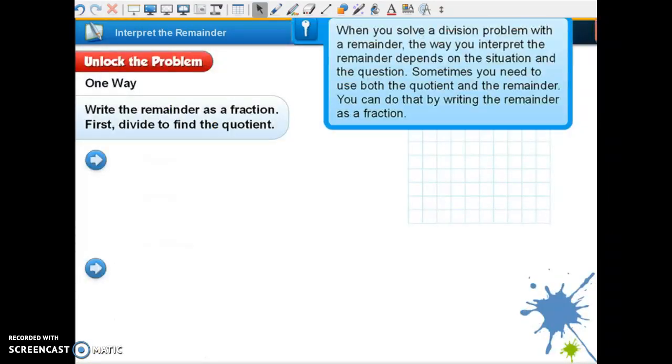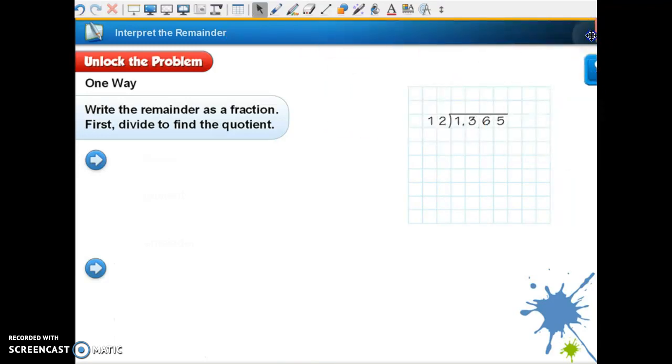It says when you solve a division problem with the remainder, the way you interpret the remainder depends on the situation and the question. Sometimes you need to use both the quotient and the remainder. You can do that by writing the remainder as a fraction.